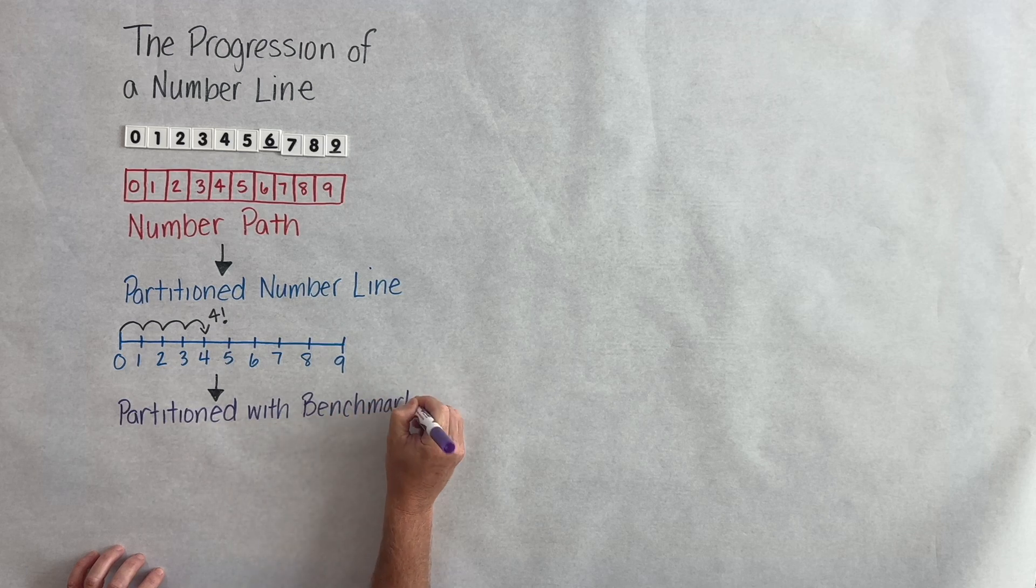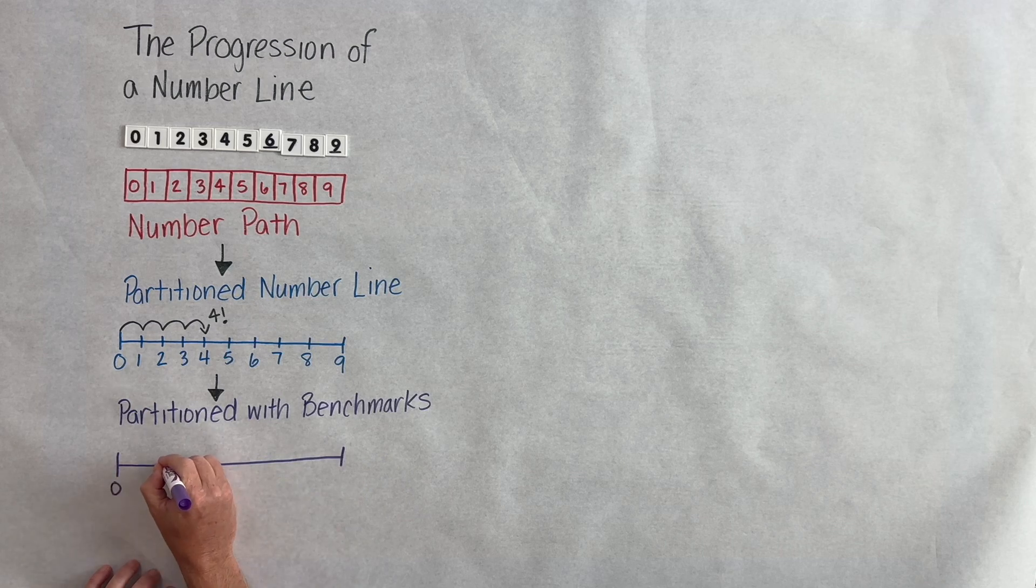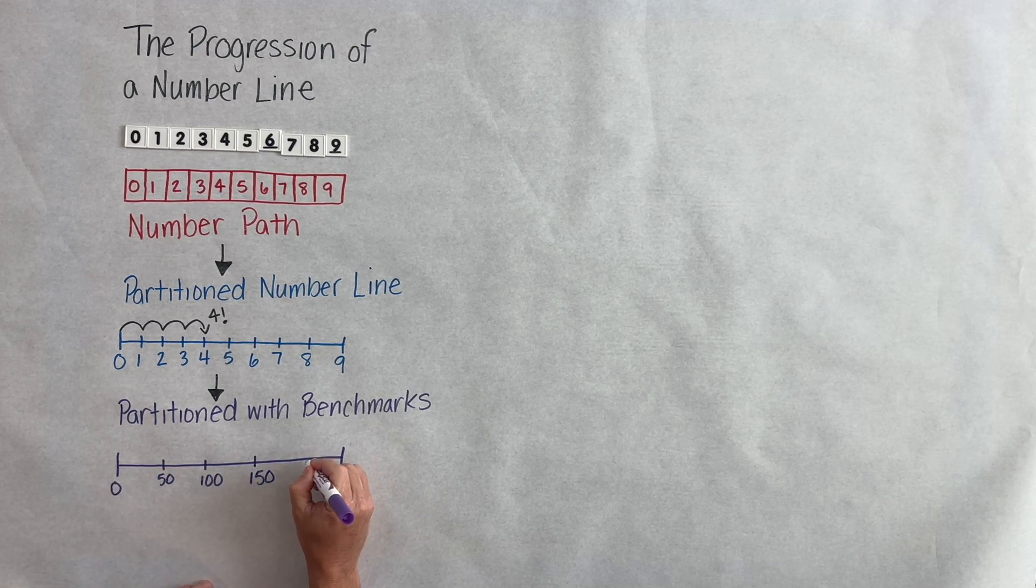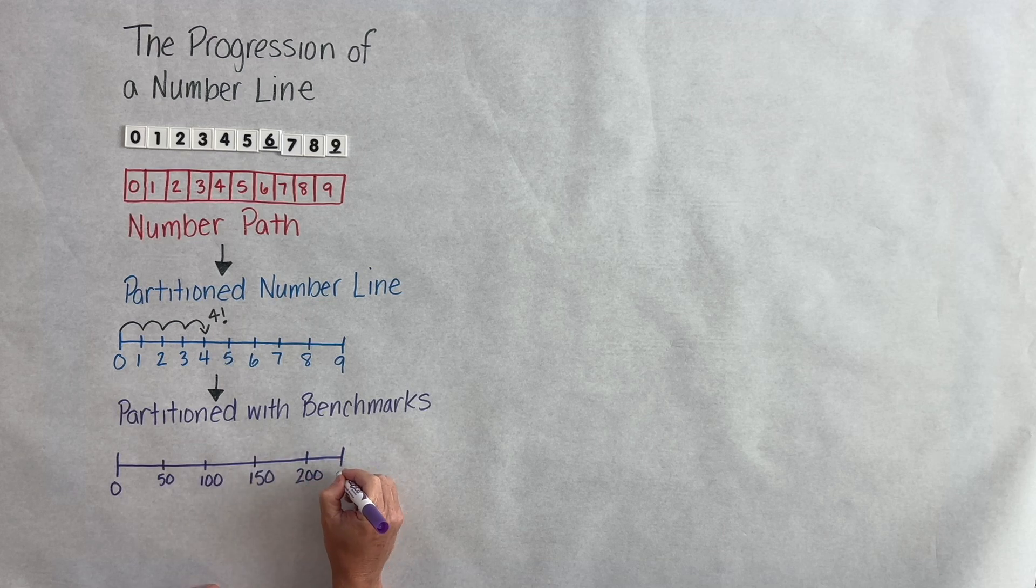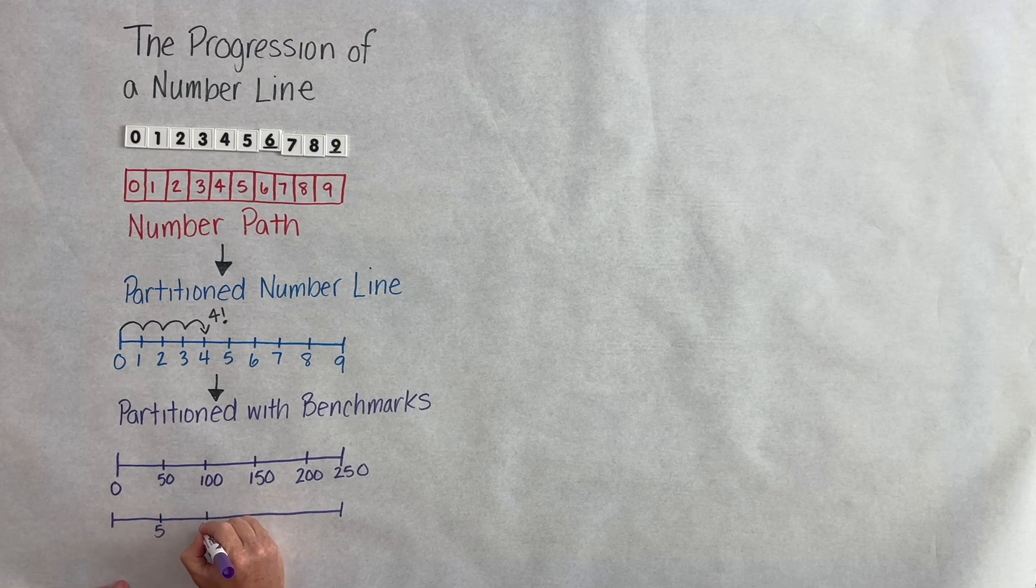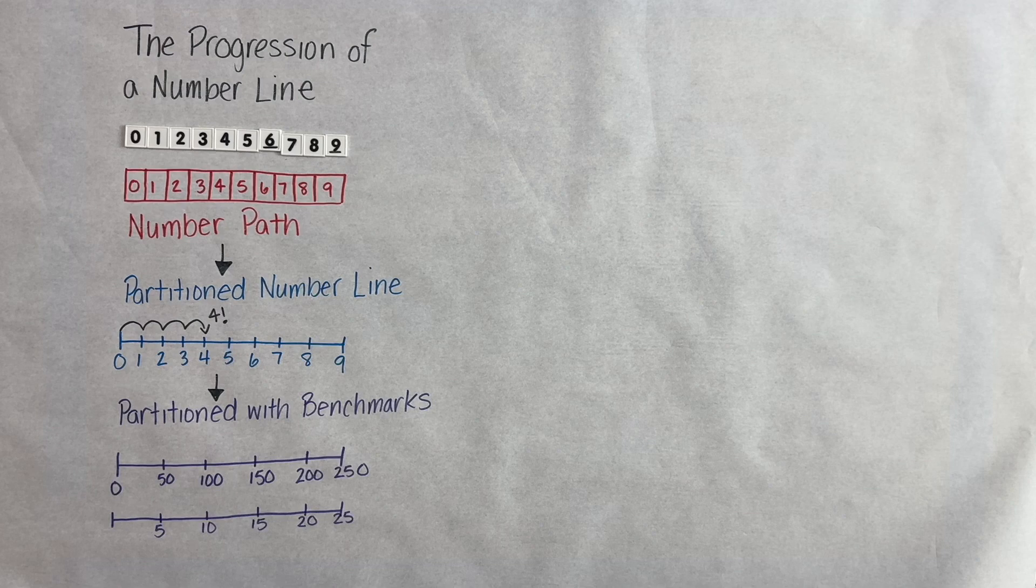Then we gradually begin to move the one-to-one correspondence of the partitioned number line and implement and use benchmarks. Here you can see that we've now gone way beyond numbers through 20, but it doesn't start in first and second grade. Maybe we use those benchmark understandings towards the end of kindergarten and first grade.